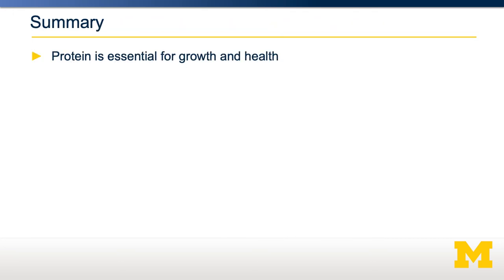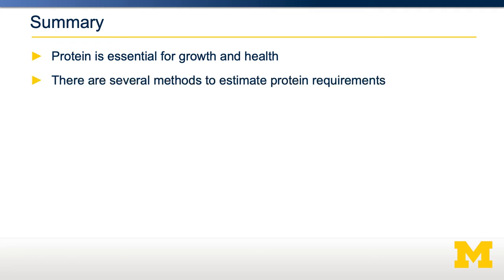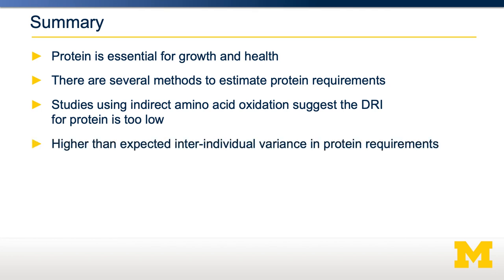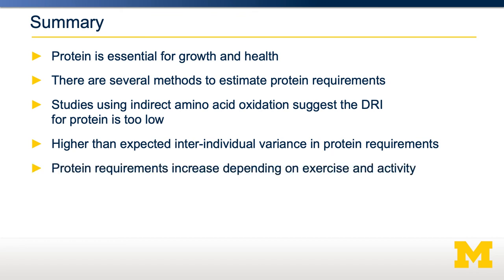In summary, protein is an essential nutrient required for growth and health. There are several different ways we can measure protein requirements, and these can be measured experimentally — meaning protein requirements can be determined much more rigorously than fat or carbohydrate requirements, and can be measured at an individual level. Studies using indirect amino acid oxidation overestimate the amount of protein required compared to nitrogen balance, and it's controversial whether the DRI for protein is correct or too low. Part of this is because indirect amino acid oxidation has revealed higher than expected inter-individual variance in protein requirements.